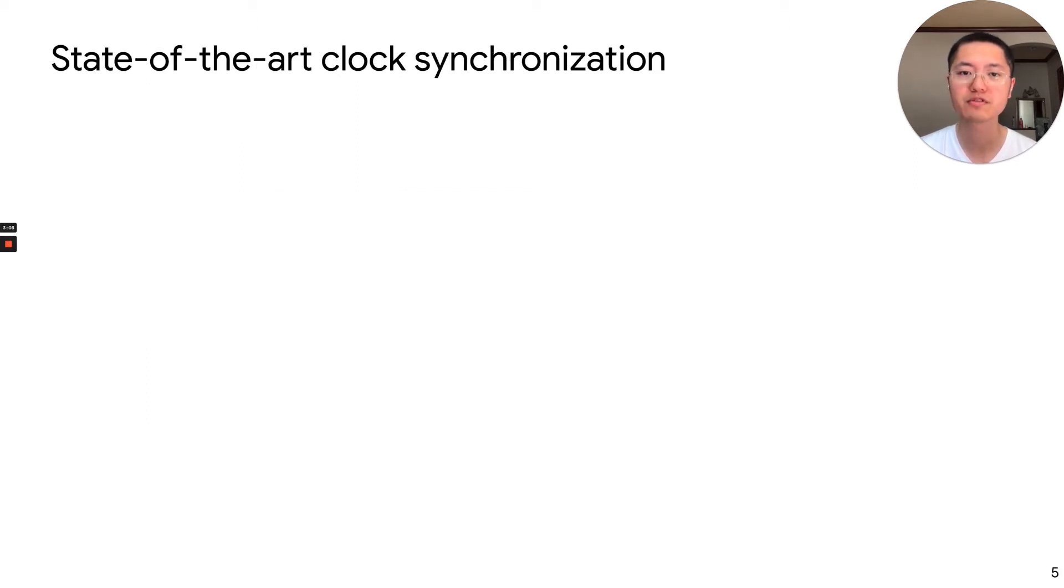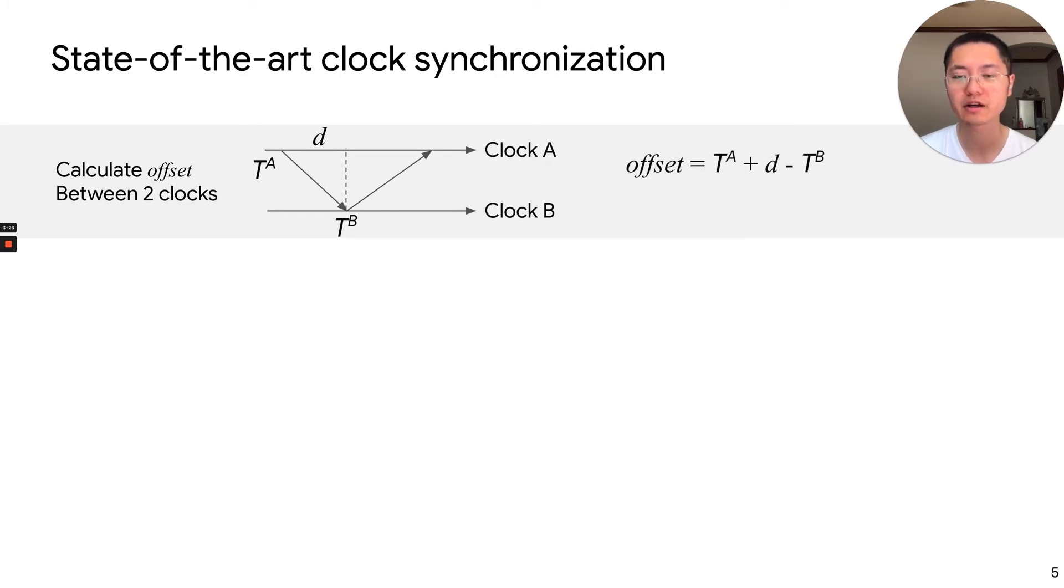So let me briefly introduce how existing solutions work. They involve several design choices. The first is to calculate the offset between two clocks. This can be done by exchanging messages. The offset can be calculated with the sending time plus the one-way delay minus the receiving time. We cannot measure one-way delay directly, so we usually use the RTT to estimate it.